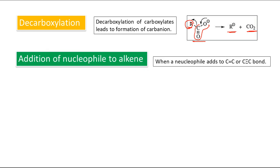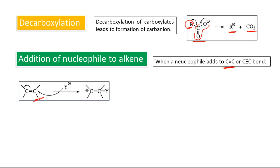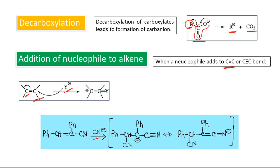The third method is addition of a nucleophile. A nucleophile is a species containing a negative charge or lone pair. When a nucleophile adds to C=O or C≡C, a negative charge can be generated over carbon. Taking a general C=C structure where Y⁻ is the nucleophile, when it attacks one carbon, negative charge is generated on the other carbon. For example, CN⁻ is the nucleophile attacking a C=C bond, and negative charge is generated over that carbon. This negative charge is very stable due to the electron-withdrawing CN group, and resonance is also possible.